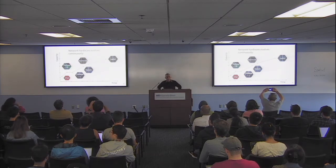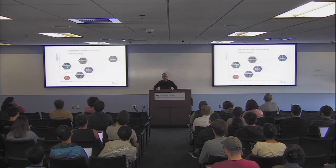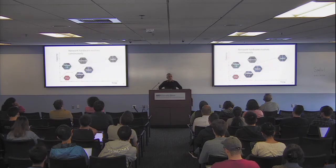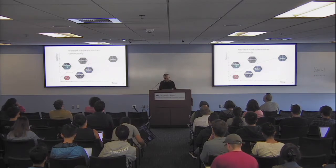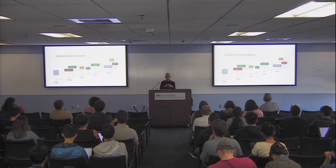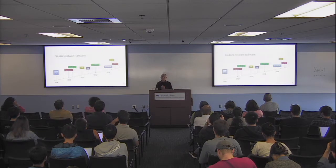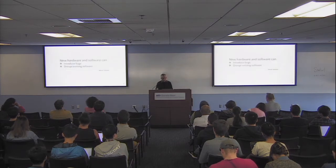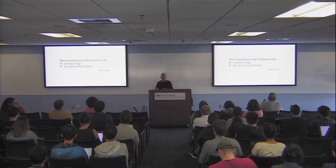This is a chart from a talk I gave several years ago about how Google's network evolved over a decade — the x-axis is time, the y-axis is capacity. They've been trying to build larger and larger capacity data center networks for many years. At the same time, as they build these networks, they're also building additional software and capabilities. When you change the hardware and software, you're going to introduce bugs and disrupt existing software.